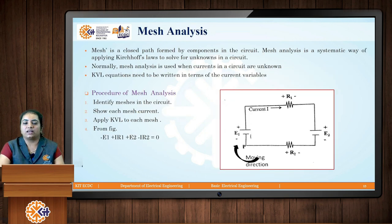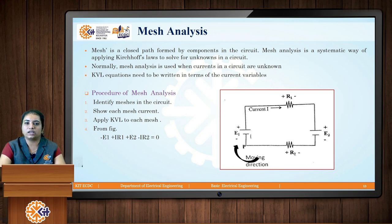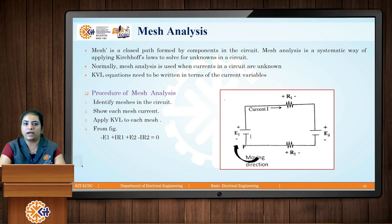Now we will study mesh analysis — how to solve a circuit using it, just like nodal analysis. A mesh is a closed path that does not contain any other loop within it. In mesh analysis, we identify how many meshes are there; that many unknown currents must be solved. The procedure: first identify the number of meshes, then assign a mesh current to each (I1, I2, etc. — both clockwise, both anticlockwise, or mixed), then apply KVL to each mesh.